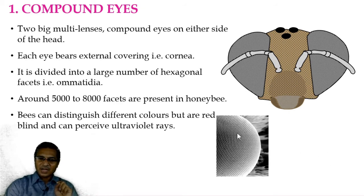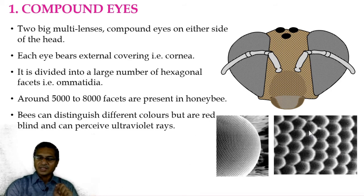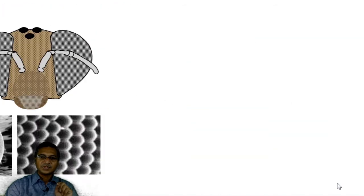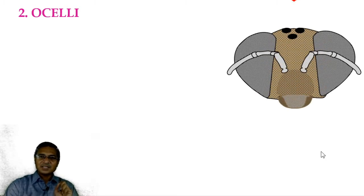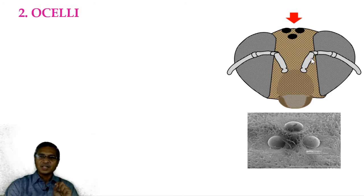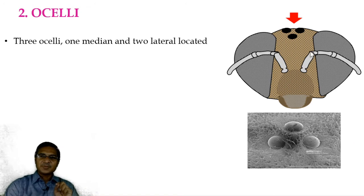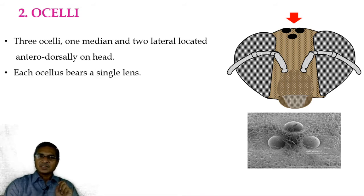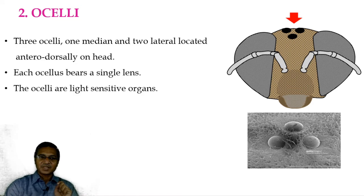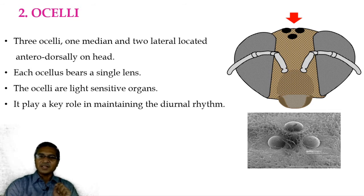This is the structure of a single compound eye, where a number of small facets are present. When we magnify, these are the facets which are present. At the topmost position of the head region, three ocelli are present. One is median and two are laterally located on the dorsal region of the head. Each ocellus bears a single lens — it is a simple eye. The ocelli are light-sensitive organs and play a key role in maintaining the diurnal rhythm.